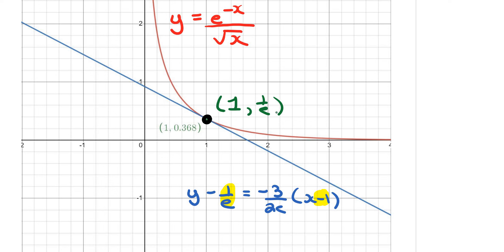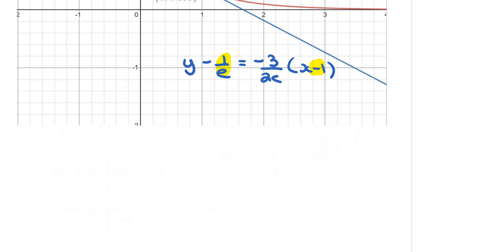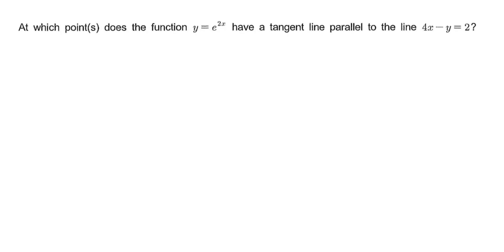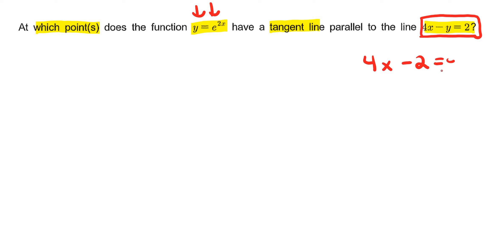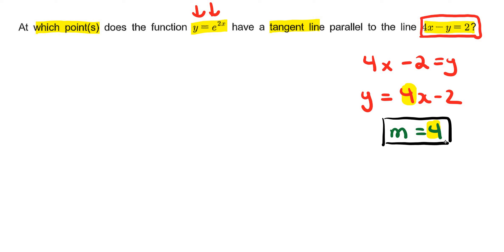Let's move on to another graphing type of problem — not a tangent line question, but the question asks: at which points does this function have a tangent line that's parallel to this line? So basically what we need to do first is find the slope of this linear line by solving for y. This is the same as y equals 4x minus 2, so the slope of that line is 4.